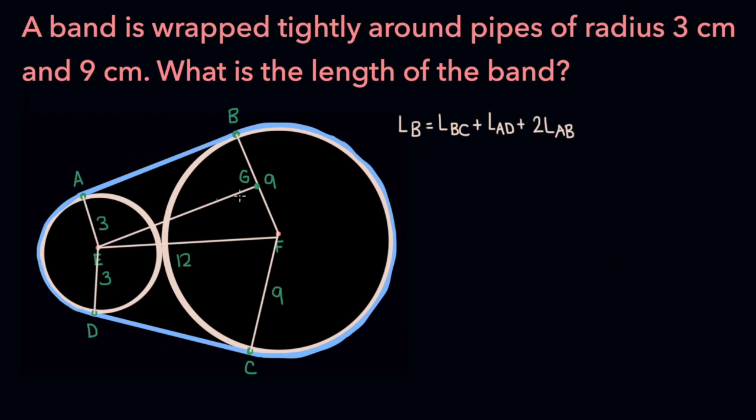Since ABGE is a rectangle, AE and BG, which are sides that are opposite of each other, must be of the same length. So BG must be of length 3 as well.